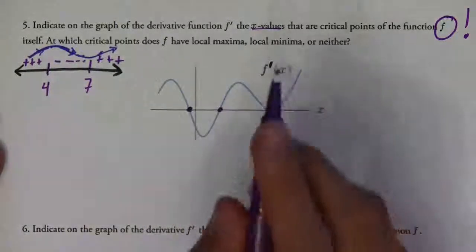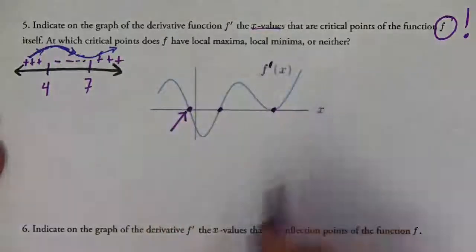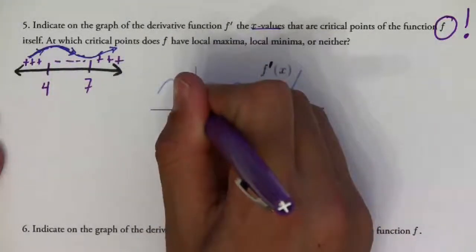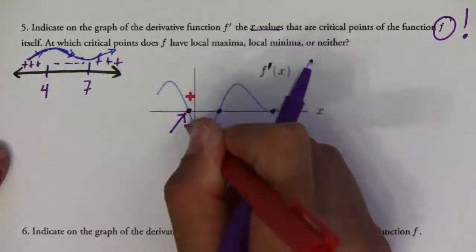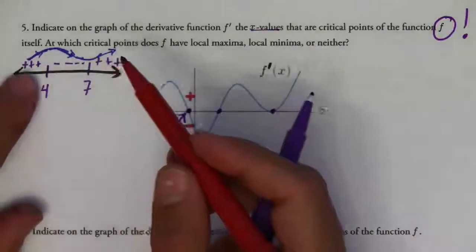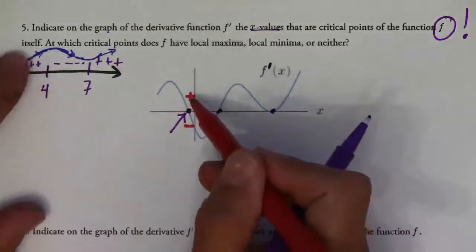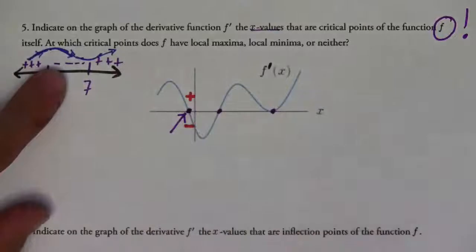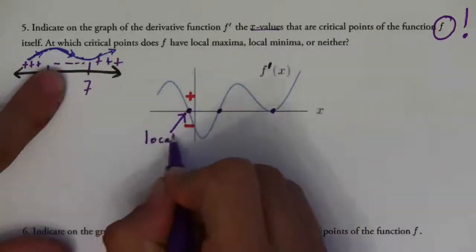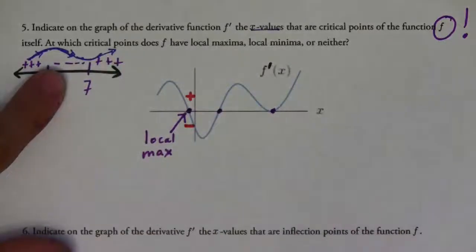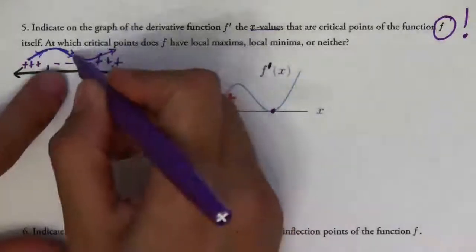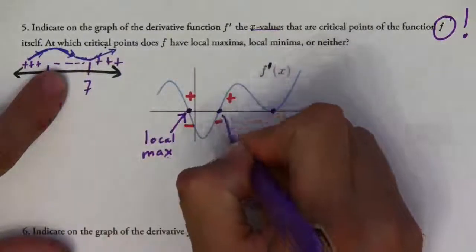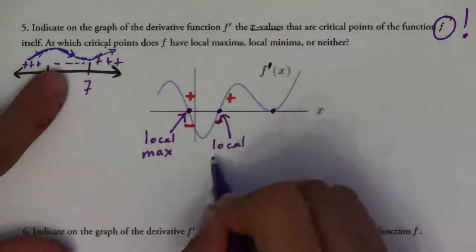These are all critical points. At this x value, notice that the first derivative goes from positive to negative. This is similar to what we have on the number line at 4 — since it goes from positive to negative, the function goes from increasing to decreasing, which means this is going to be a local maximum. Over here, the derivative is negative and then becomes positive — like the situation at 7, where it's decreasing and then increasing. That means this value is going to be a local minimum.